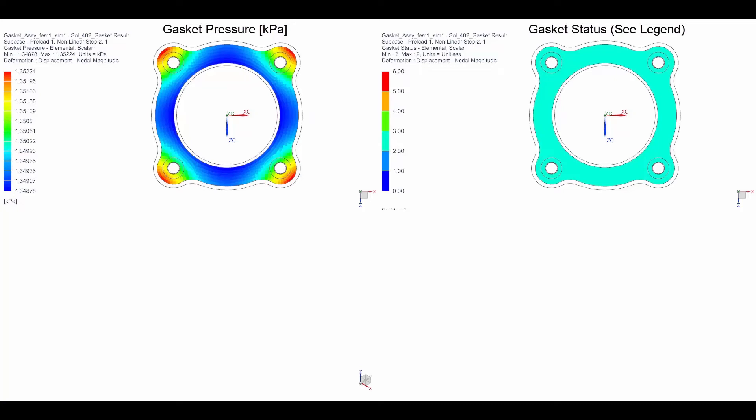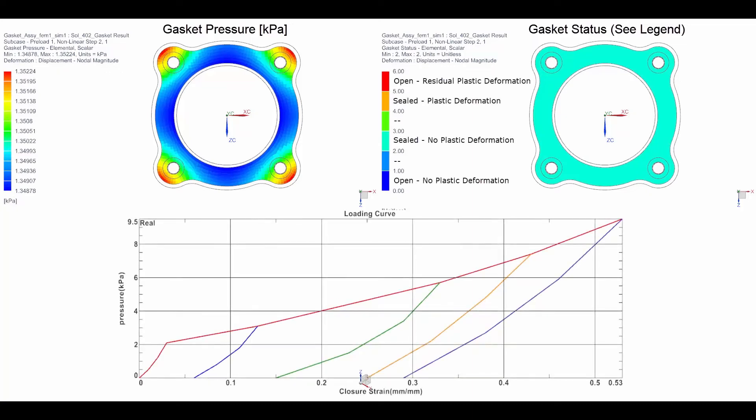The gasket status provides an integer for each element that gives the information whether the gasket is sealed or open and if there is or not plastic deformation. The gasket's loading and unloading curves are also shown to help understand the gasket results.